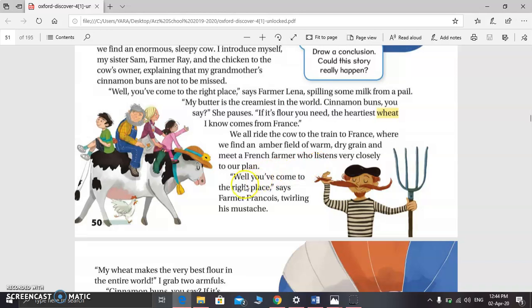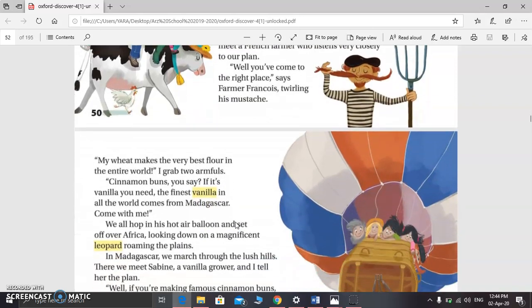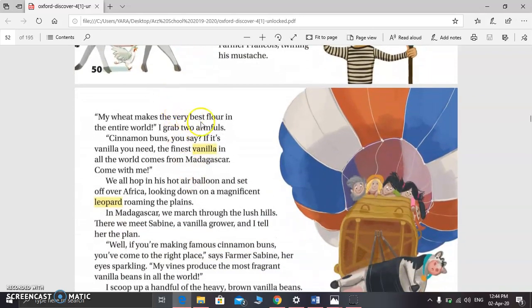I suppose it's clear. So the farmer said, well, you've come to the right place, says Farmer Francois. This is Farmer Francois. He was twirling, it means turning or rotating, his mustache. He said, my wheat makes the very best flour in the entire world. I grabbed two armfuls—so he grabbed, he took two armfuls.